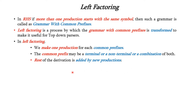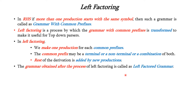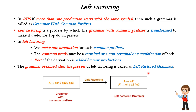The rest of the derivation is added by new productions. The grammar obtained after left factoring is called a left factored grammar. This is the generic technique: we have a grammar A → a alpha1 | a alpha2 | a alpha3, where the common prefix among all three productions is 'a'.